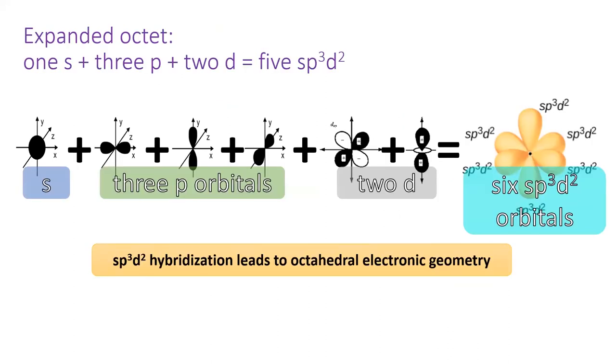Lastly in our series is the hybridization of one S, three P, and two D orbitals, which make six SP³D² orbitals.